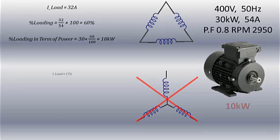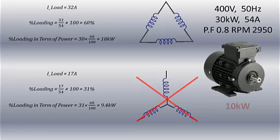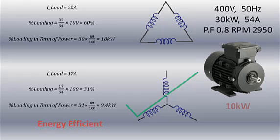However, if the motor is drawing 17 ampere, which is 31 percent of its rated current, the motor will be running at 31 percent of its rated power, which is approximately 9.4 kilowatt. Since this is less than 10 kilowatt, running the motor in star configuration will be safe, and it will also be more energy efficient compared to delta connection.